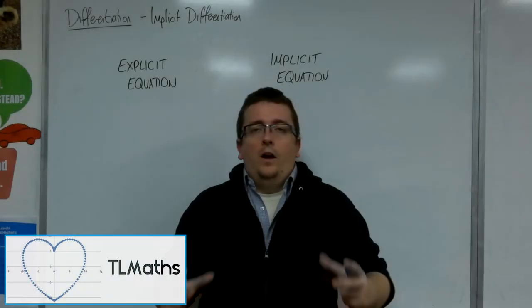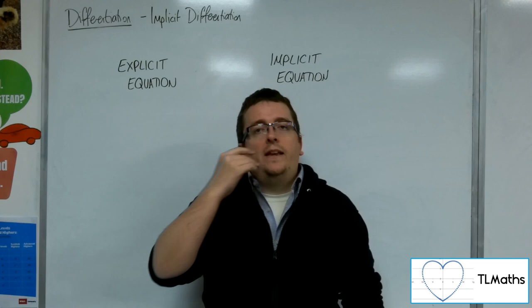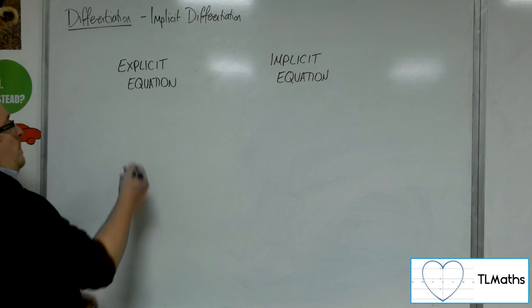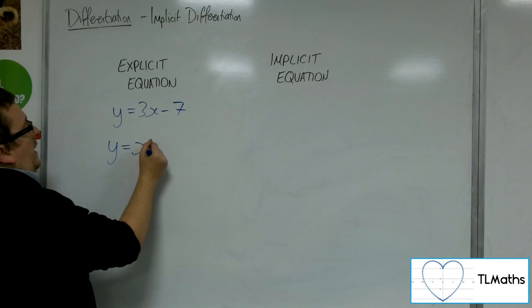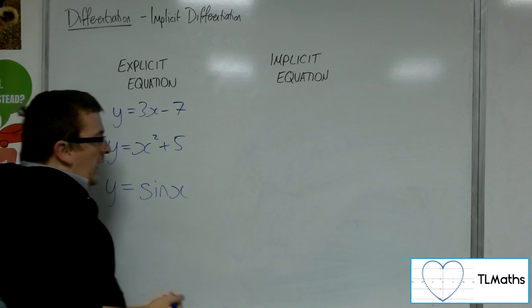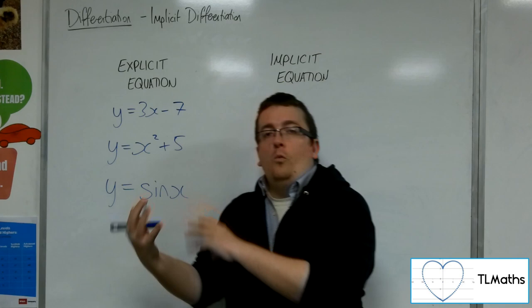What you've been used to using in the grand scheme of things is something called explicit equations. So equations that were written of the form y equals 3x minus 7, or y equals x squared plus 5, or y equals sin x. And in all of these three cases, what we have is a situation where you've got y equals some function of x.